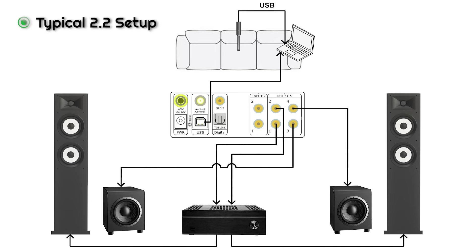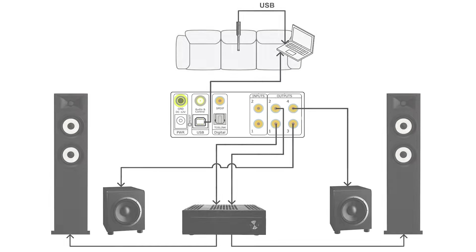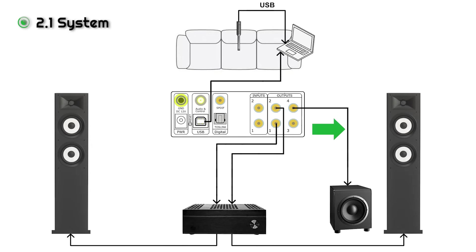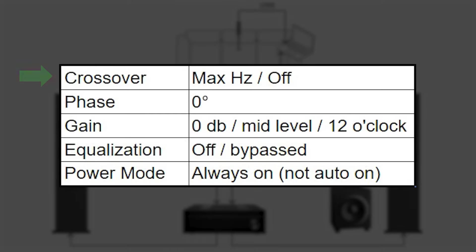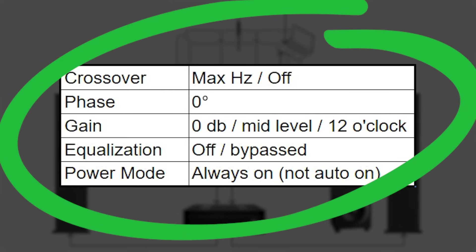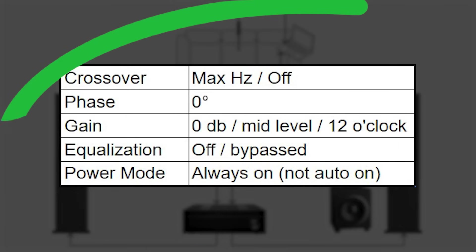This image shows a typical 2.2 setup for measurement and room correction. A 2.1 system with a single subwoofer will use channel 3 configured as a mono output. Be sure to check that the crossover, phase, gain, equalization, and power mode of your subwoofers are either bypassed or set to nominal. This chart shows how your subwoofers should be set so as to not interfere with the parameters that will be set up in the MiniDSP device console.